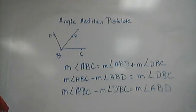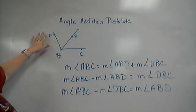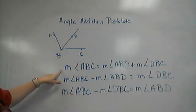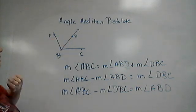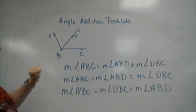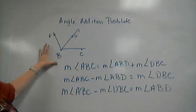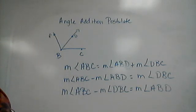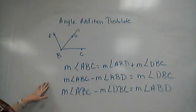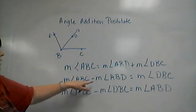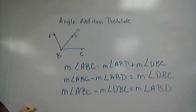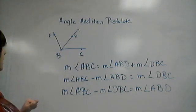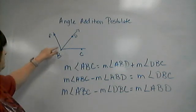I'm going to very quickly review the angle addition postulate. So we have this large angle ABC. The measure of angle ABC is found by adding the measures of angle ABD plus the measure of angle DBC. So you add the two small angles together and it gives you the large angle. Or you can rewrite this to find one of the smaller angles: the measure of ABC minus the measure of ABD will give the measure of DBC, or the measure of ABC minus the measure of DBC will give the measure of angle ABD.